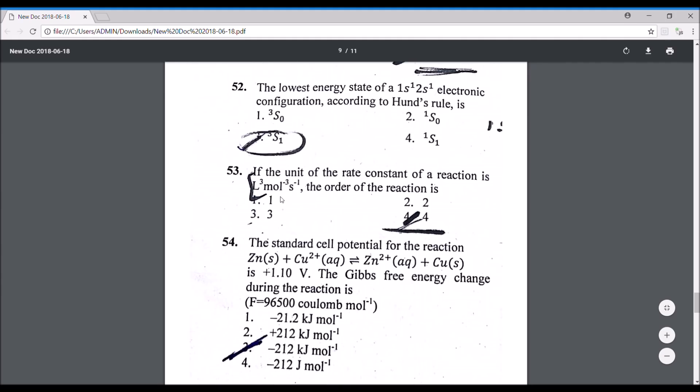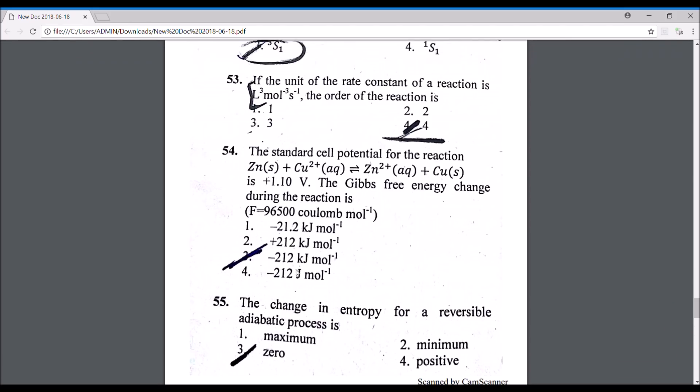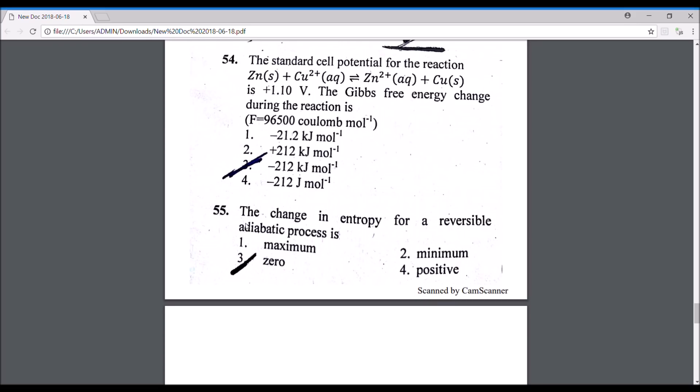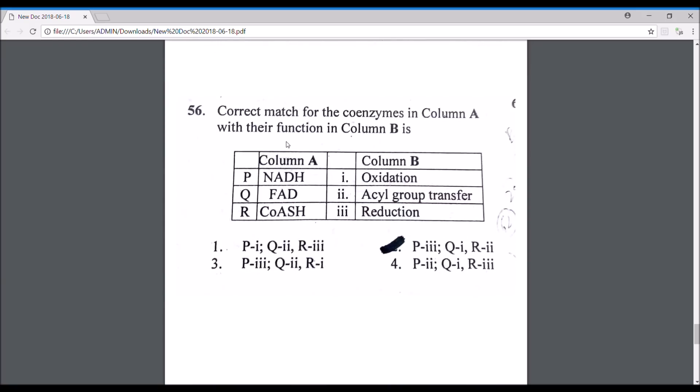The units of rate constant for the reaction, simple question, that is four. This is again a simple question: ΔG = -nFE⁰. Since the standard cell potential is positive, the answer is definitely going to be negative and it is going to be in kilojoules. If you calculate properly, the calculations are actually very simple, it comes out to be option number three. The change in entropy for a reversible adiabatic process is zero. Just go through the concept once, it's pretty easy. There are a few physical questions that I've missed out. I was not sure about the answer, so these are two or three questions from physical chemistry I've missed out. I'll cover them later if I find the answer. In case you have some doubts, please feel free to comment below and let me know.